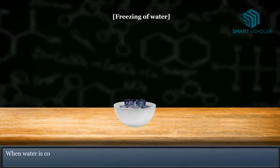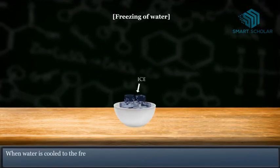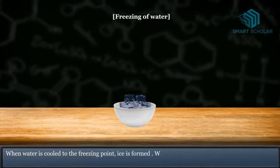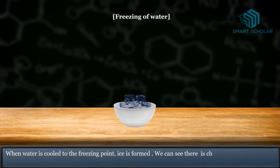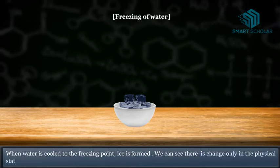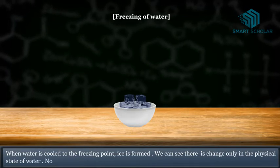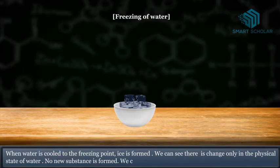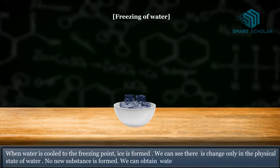Freezing of water. When water is cooled to the freezing point, ice is formed. We can see there is a change only in the physical state of water. No new substance is formed. We can obtain water again by melting the ice.